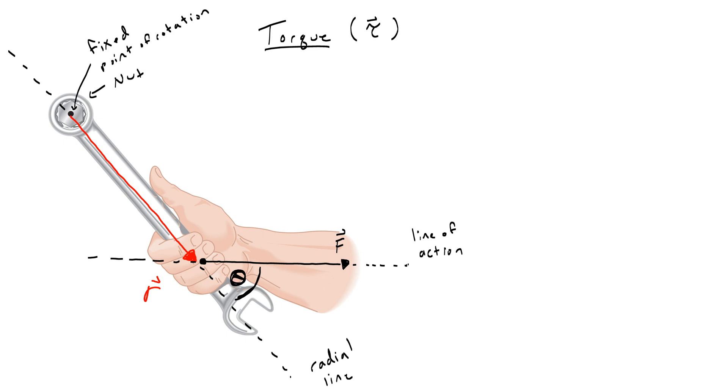That angle theta will let me take this force and turn it into a parallel and perpendicular component. Remember, with vectors, you can always treat the vector as the hypotenuse of a right triangle made of components. This bottom component I'm going to call F parallel because it's parallel to the radial line. This other component I'm going to call F perpendicular because it's perpendicular to the radial line.